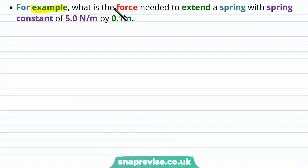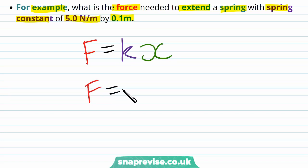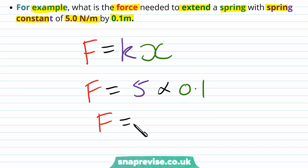For example: what is the force needed to extend a spring with spring constant 5 N/m by 0.1 meters? Using Hooke's Law, F = kX, we substitute K = 5 N/m and X = 0.1 m, giving F = 5 × 0.1 = 0.5 newtons.